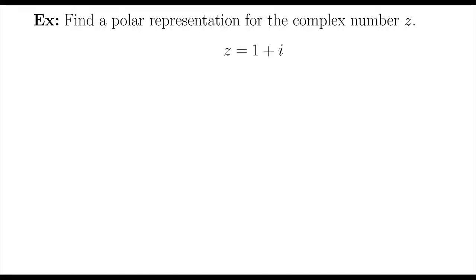Let's find the polar representation for the complex number z equals 1 plus i. So remember, a complex number is a number that is written in the form a, where a is a real number, plus b